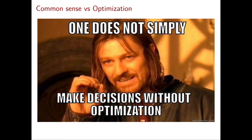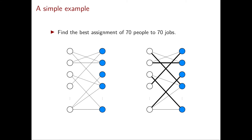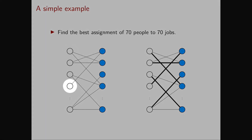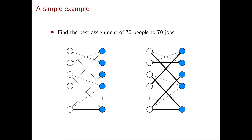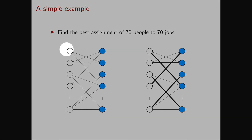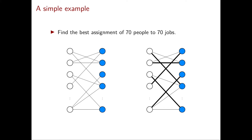In general, one does not simply make decisions without optimization. Let me convince you of this by giving you an example that seems relatively simple — so it doesn't even seem like a very complex system — but where optimization is really needed. This example is what we're going to call later in the course the assignment problem. Let's say we have 70 people and 70 jobs. We can visualize the 70 persons as 70 white dots on the left, and similarly, we can visualize our 70 jobs as 70 blue dots on the right. For every pair of person and job, we're going to put a link between the two of them if and only if that person can perform that job.